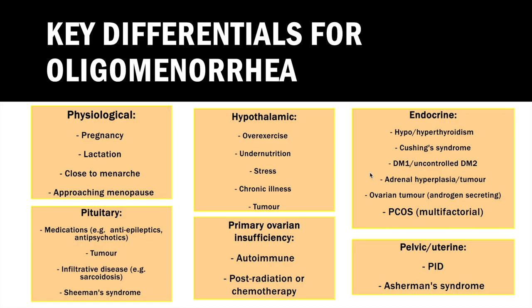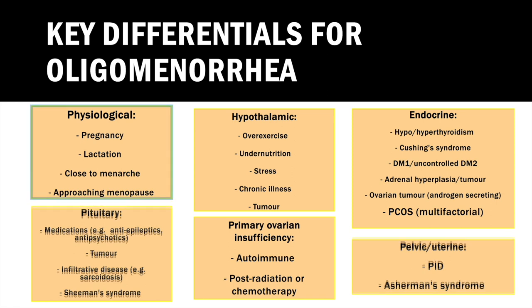As a bonus question: which STD could potentially present with a worsening of vulval itch during menstruation? Reviewing your lecture slides on oligomenorrhea, the working definition is fewer than nine periods a year, or cycles greater than 35 days. You try to condense the many differentials into workable categories, beginning with whether the cause could be physiological: is the patient pregnant, lactating, close to her menarche where cycles are often irregular, or approaching her menopause?